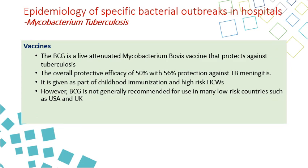For prevention, fortunately there is a vaccine for TB called the BCG vaccine. It is a live attenuated Mycobacterium bovis from cattle that protects against tuberculosis, with moderate protection of about 50 to 56 percent against severe TB forms like TB meningitis. It is given in most countries as part of childhood immunization after birth and in high-risk occupations like healthcare workers, especially lab personnel. However, BCG is not generally recommended for use in many low-risk countries like the USA or UK.